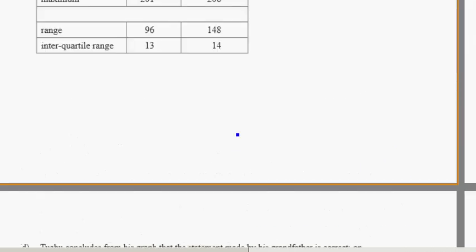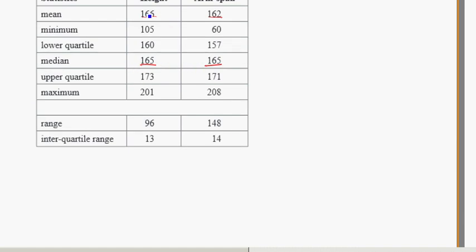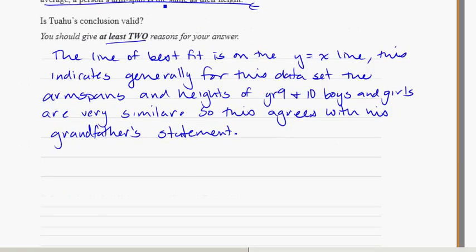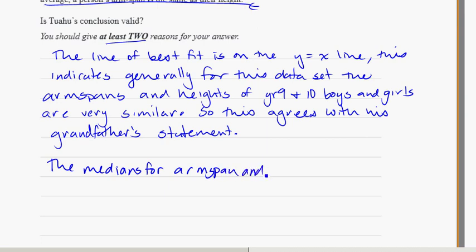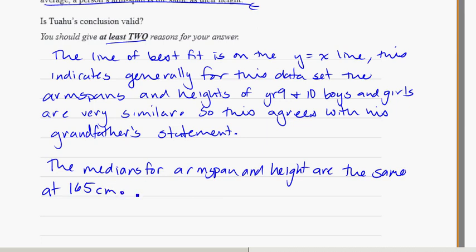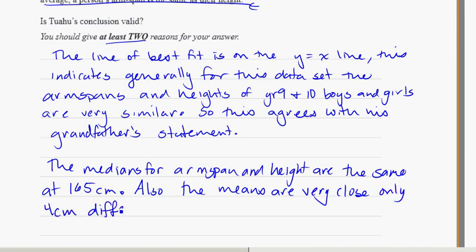Another point we could look at is the means and medians. The medians are both the same at 165, and the means only have a 4 cm difference. So the medians for arm span and height are the same at 165 cm. Also, the means are very close, only 4 cm different. That's probably to do with the outliers. It was 166 cm and 162 cm.